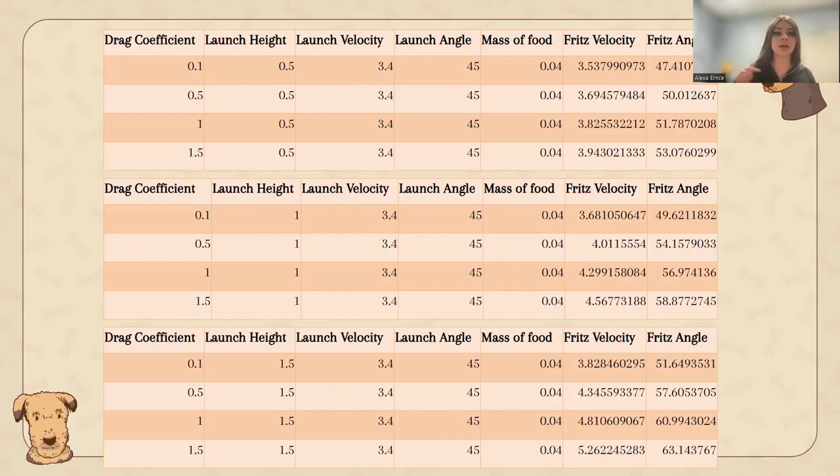So here we have a table where there's five main variables that contribute to what Fritz's velocity and angle is going to have to be to intersect with the path of food. So that is drag coefficient, launch height, launch velocity, launch angle, and the mass of the food. Now in these tables, we're looking at the different drag coefficients, and then in each of the three tables, the first one is looking at a launch height of 0.5 meters, the second one is one meter, and the last one is 1.5 meters. Now what we found for the launch angle is that 45 is about the perfect launch angle for it to be thrown at, because at 30, Fritz is unable to intersect the path of food, and then at 80, he's also unable to intersect the path of food. So when it comes to his velocity, you'll see that as the drag coefficient increases, so does Fritz's angle he has to jump at, as well as for the launch height, he's going to have to jump at a bigger angle when the launch height increases.